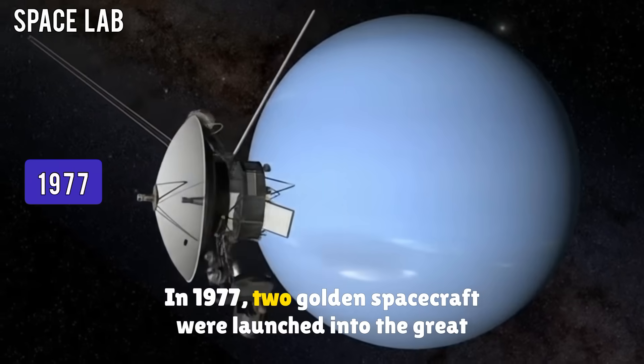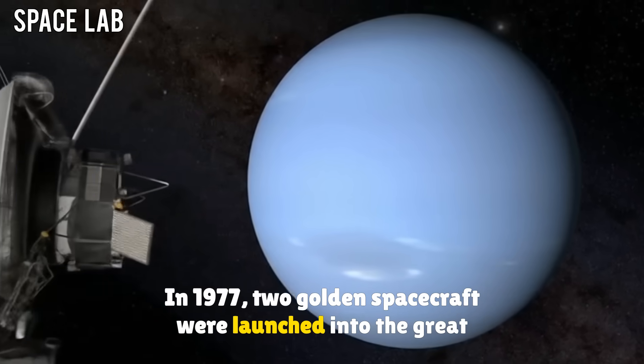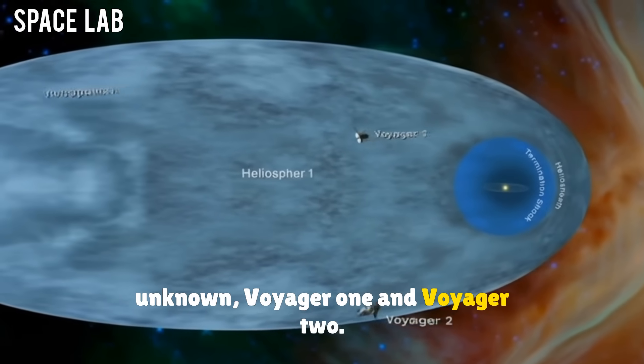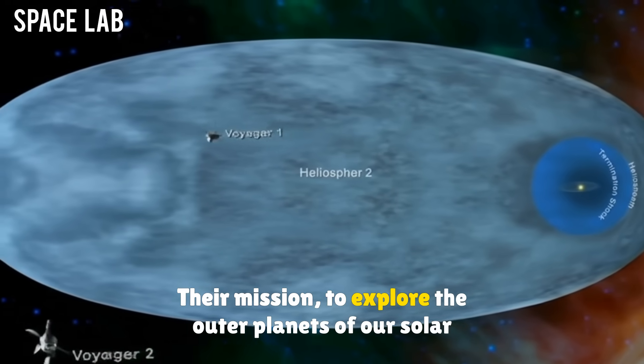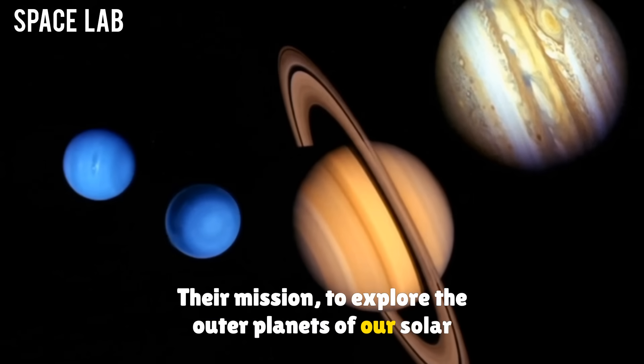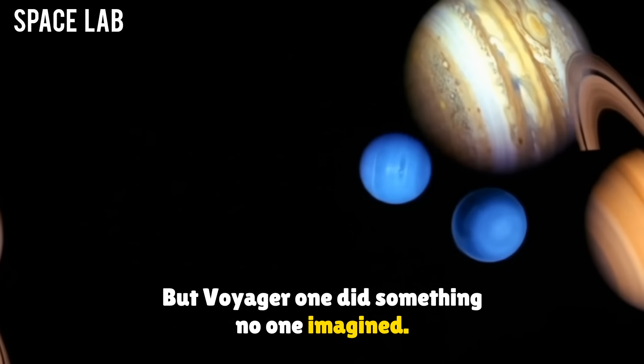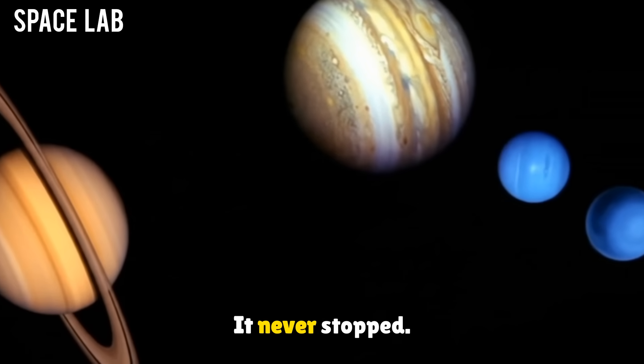In 1977, two golden spacecraft were launched into the great unknown, Voyager 1 and Voyager 2. Their mission? To explore the outer planets of our solar system. But Voyager 1 did something no one imagined. It never stopped.